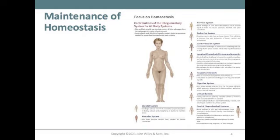The skin helps activate vitamin D, which is needed for the proper absorption of dietary calcium and phosphorus to build and maintain bones. Skin helps provide calcium ions needed for muscle contraction. In the nervous system, nerve endings in the skin and subcutaneous tissue provide input to the brain for touch, pressure, thermal, and pain sensations.